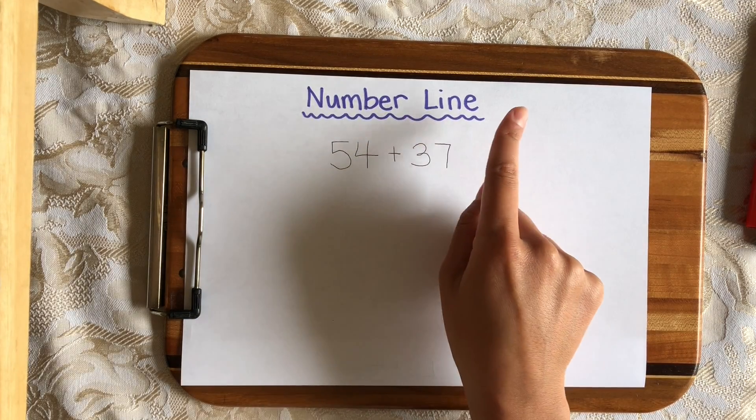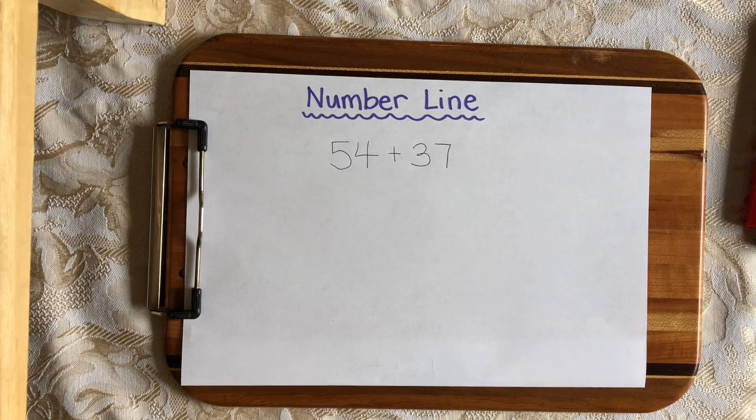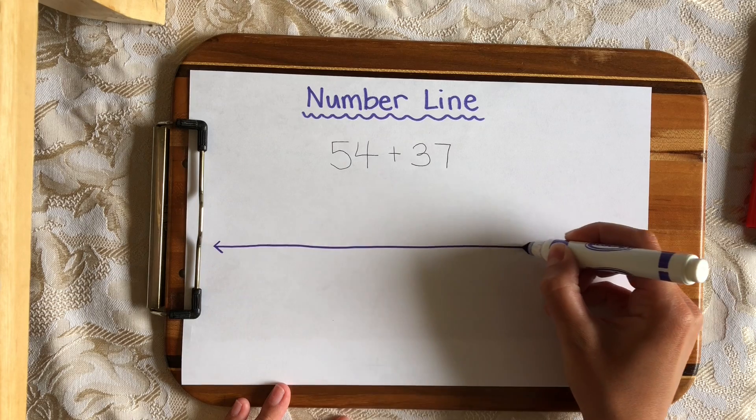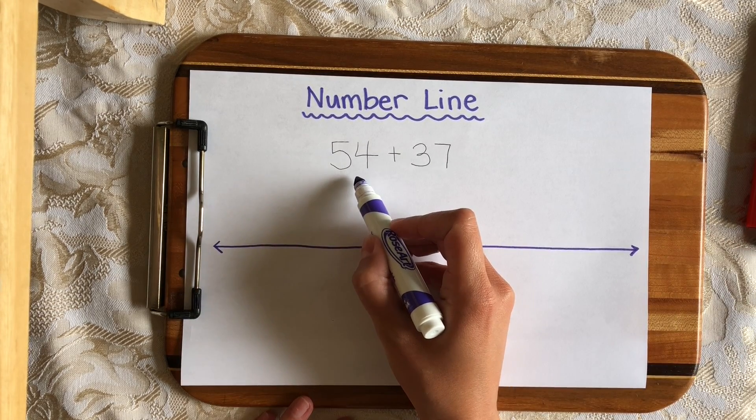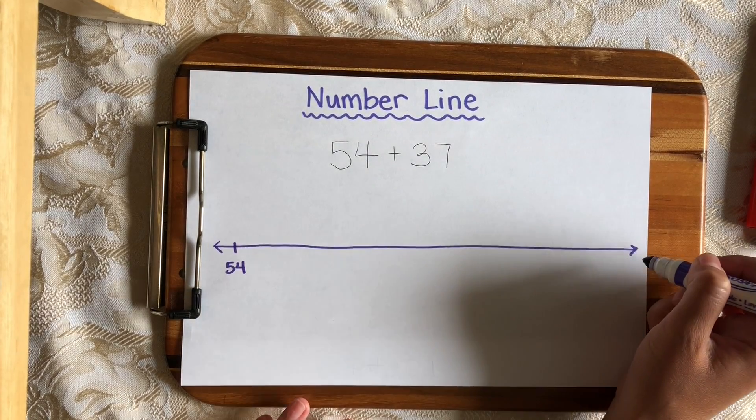This strategy is called the number line strategy, so let's solve 54 plus 37 on the number line. First, you're going to want to draw your number line and place the first addend or the bigger number on the left side of the number line so that you have plenty of room to make your hops.